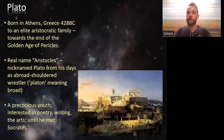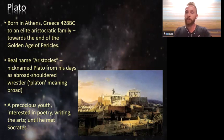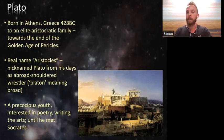Plato was born in Athens, Greece in the year 428 BC, towards the end of what is known as the Golden Age of Pericles. Having been born into a socially elite family with noble Athenian blood from both parents, Plato was able to pursue various opportunities. Aristocles was his real birth name, with Plato first given as a nickname — thought to have come from his wrestling coach due to his broad shoulders, as the word Platon is Greek for 'broad.' The young Plato was interested in poetry, writing, the arts and philosophy, and at one point planned to pursue a career in theatre and playwriting. But this changed when he overheard Socrates speaking in the marketplace; Plato was so moved that he almost immediately became a student and disciple of his.